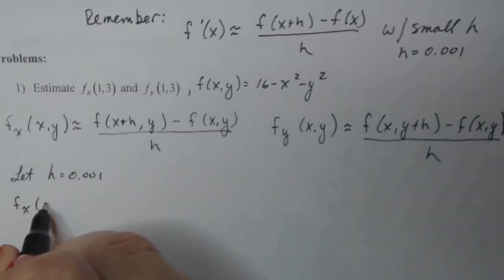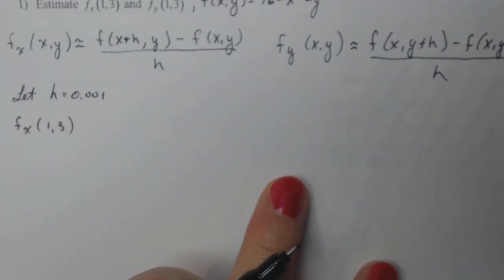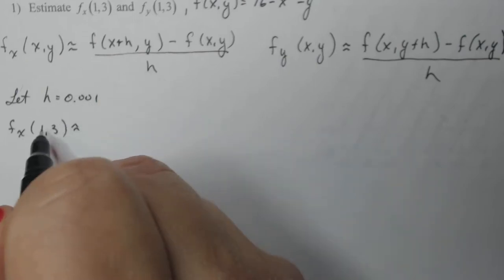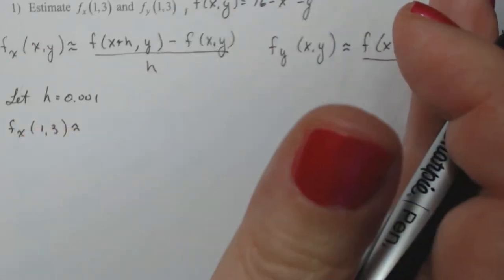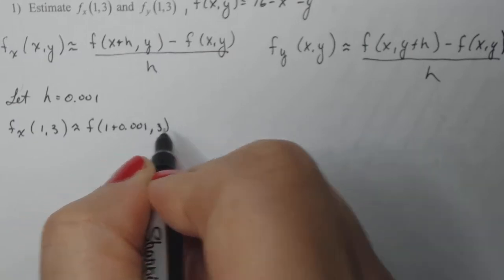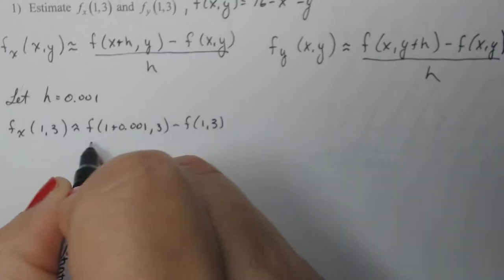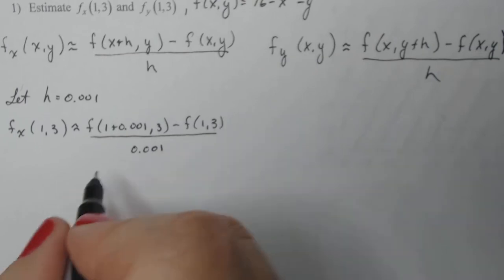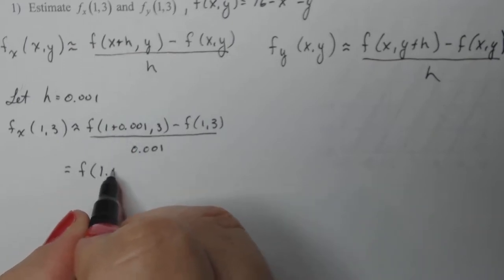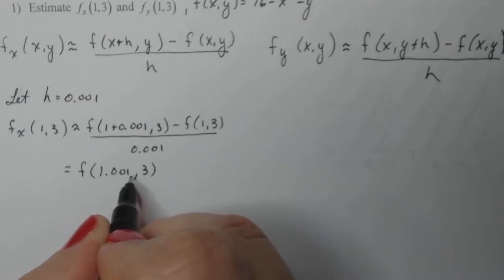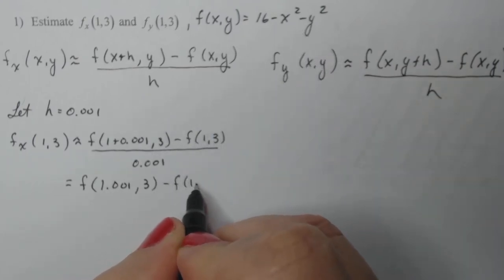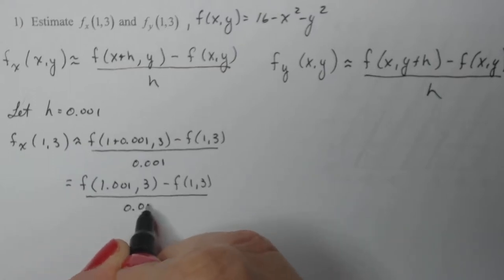For f sub x at (1,3), that's going to be approximately equal to f(1+0.001, 3) minus f(1,3) divided by 0.001. I'll add 1 plus 0.001 to get the ordered pair I stick into my original f. Then I have f(1,3) subtracted, divided by h, and it gives a good estimate.